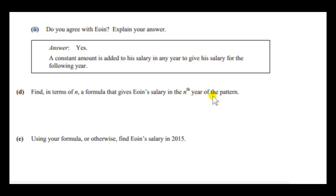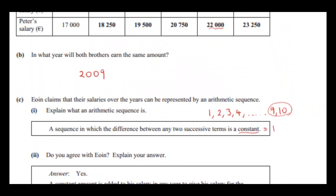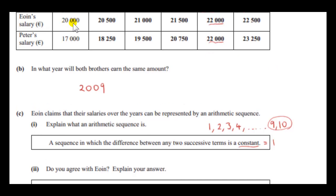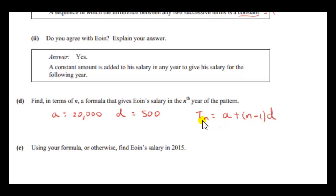Next, we will get a formula that gives Owen's salary in the nth year of the pattern. So let's look at Owen's salary. The first term is 20,000. And the difference between successive terms is 500. So in the notation for an arithmetic sequence, A is 20,000. A stands for the first term. And the common difference between successive terms, the constant difference, is 500 euros. In a previous video, we saw that to get the general term TN of an arithmetic sequence, we use this formula here. I explained where this formula comes from. So A, the first term is 20,000. A is also T1, of course. And we just want a general formula. So we are not taking any particular value of N.